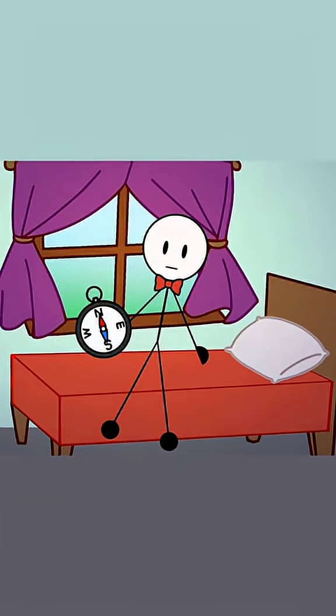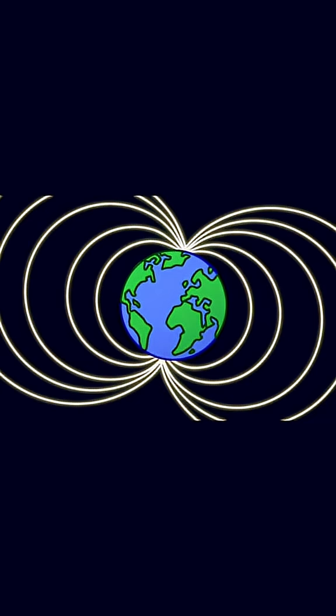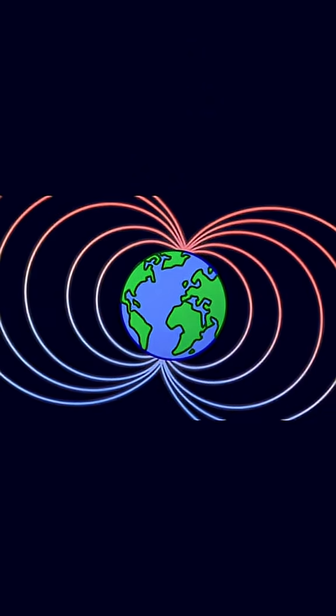What if you woke up tomorrow and compasses pointed south? Earth's magnetic field is what protects us from deadly solar radiation. Normally, north is north and south is south, but every few hundred thousand years, the poles flip, and we're overdue.